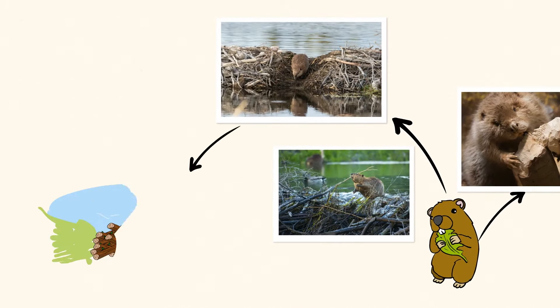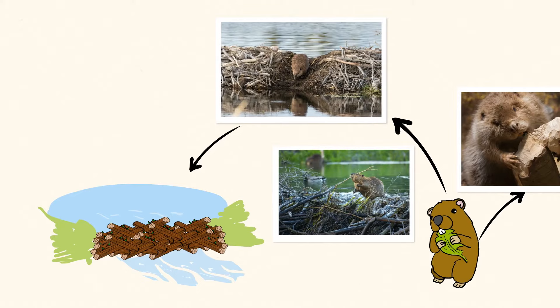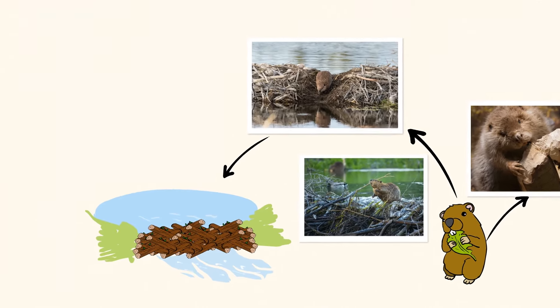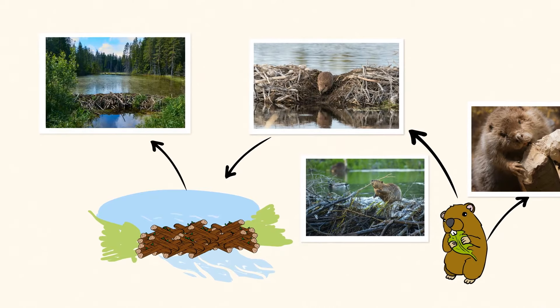After they do that, they pile the logs up across the stream to create something called a dam. The dam will block the water from flowing and create a pond where the beaver can build their lodge. The deep water of the pond protects the beaver and its family from predators.